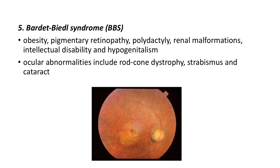Bardet-Biedl syndrome, or BBS. In this case you see obesity, pigmentary retinopathy, polydactyly, renal malformations, intellectual disability, and hypogenitalism. Ocular abnormalities include rod-cone dystrophy. This picture shows a case of rod-cone dystrophy, in which the patient has night blindness and eventually complete blindness.